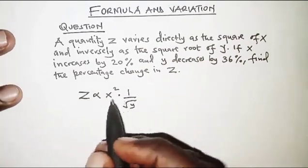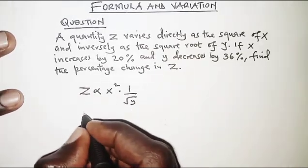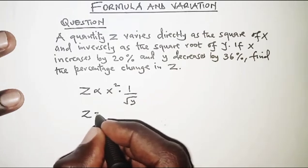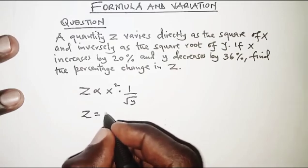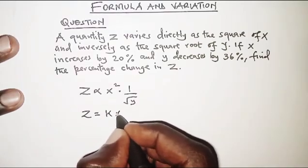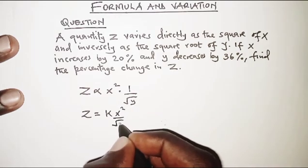So with this we can now introduce the equal sign, and when we introduce the equal sign we'll say z is equal to, and that means we'll have to introduce a constant term, let's say k. So k times x squared all over the square root of y.